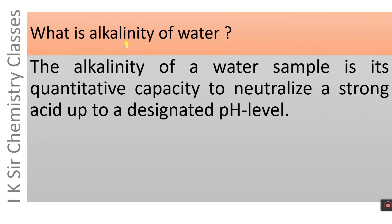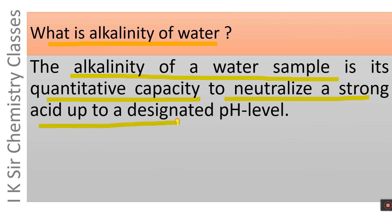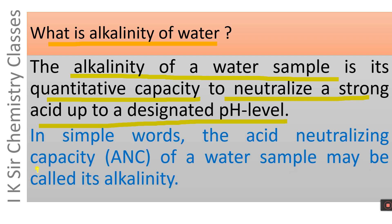Now the question arises: what is alkalinity of water? The alkalinity of a water sample is its quantitative capacity to neutralize a strong acid up to a designated pH level. In simple words, the acid neutralizing capacity, i.e. ANC, of a water sample may be called its alkalinity.